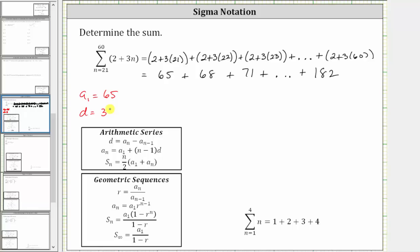Remember if we needed to we could determine the common difference d by using the formula d equals a sub n minus a sub n minus one, which means we can find d by selecting any term in the series except the first term and subtracting the term before it.